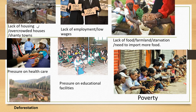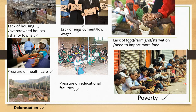One major impact of over population is lack of housing — you get overcrowded housing and shanty towns. A large population creates pressure on healthcare. It also leads to deforestation, unemployment and low wages, pressure on educational facilities, poverty, and lack of farmland and food, which eventually leads to starvation.